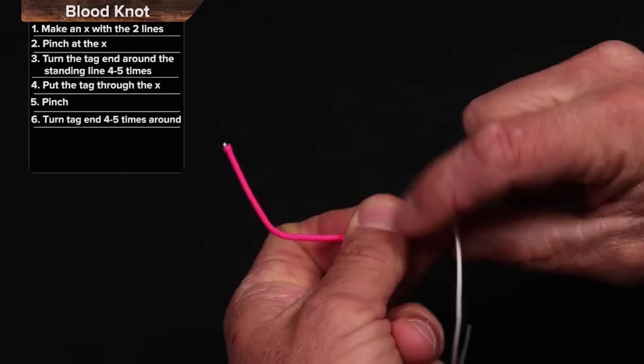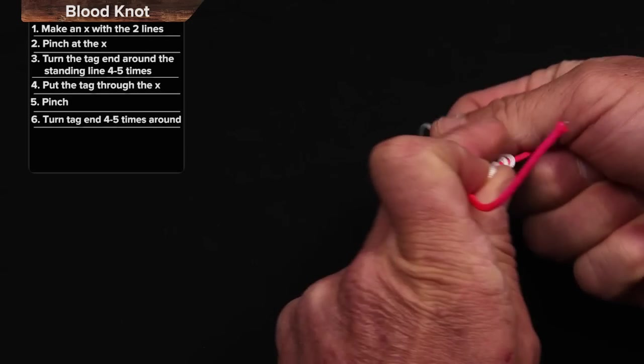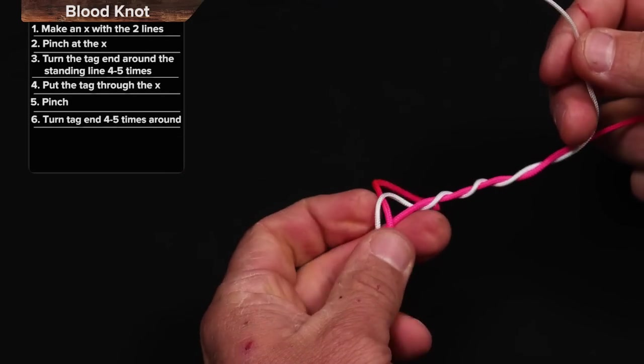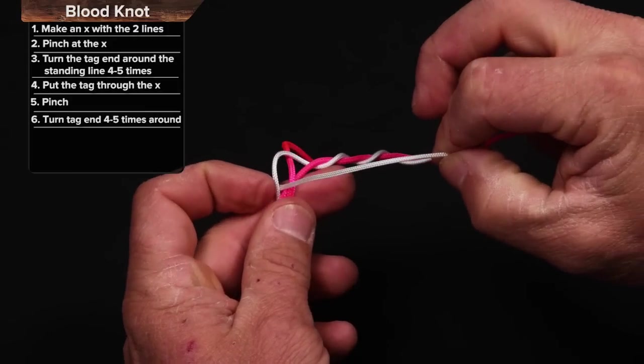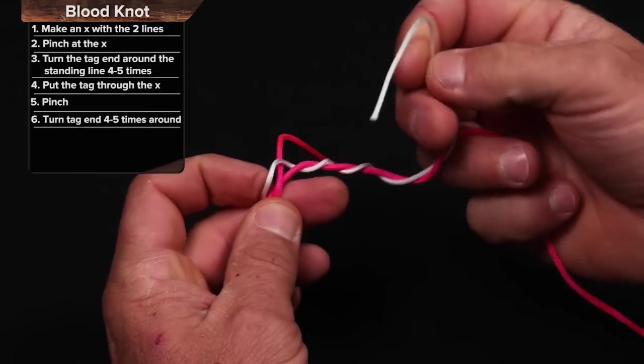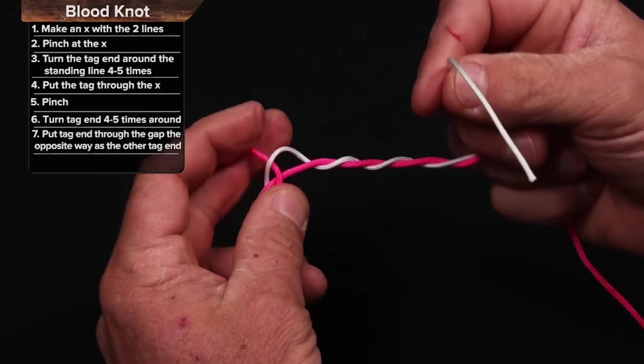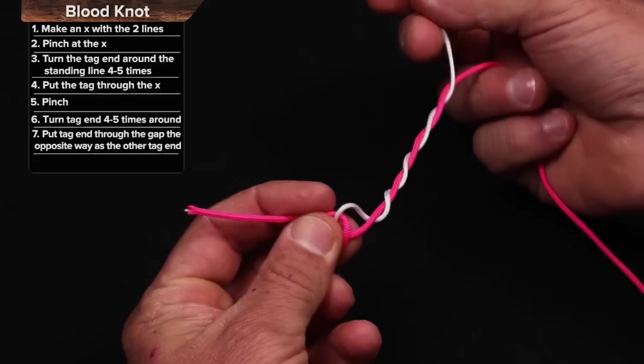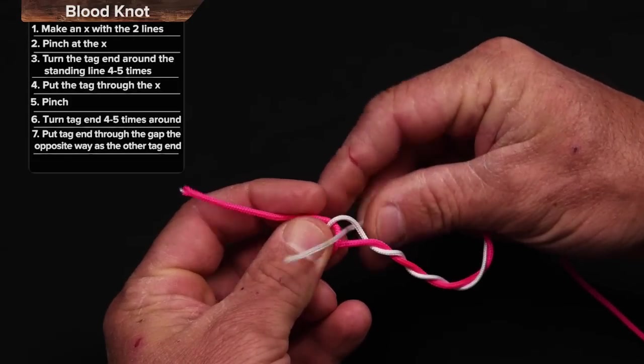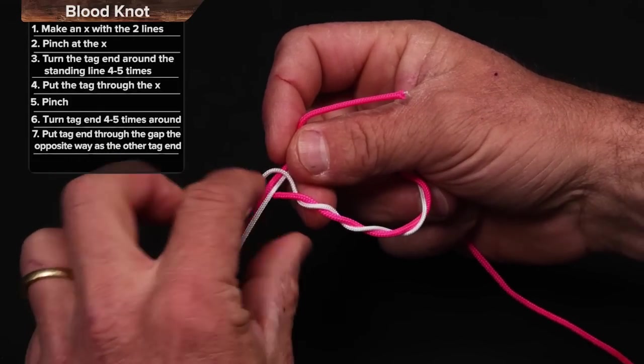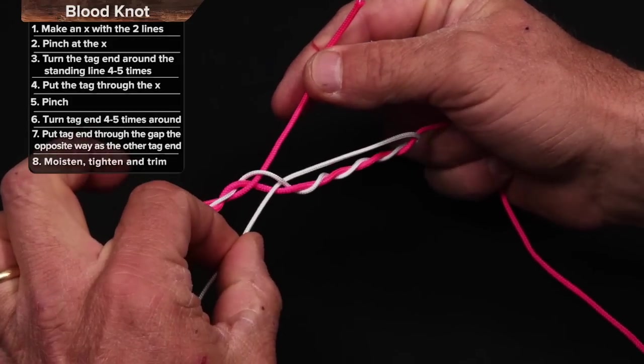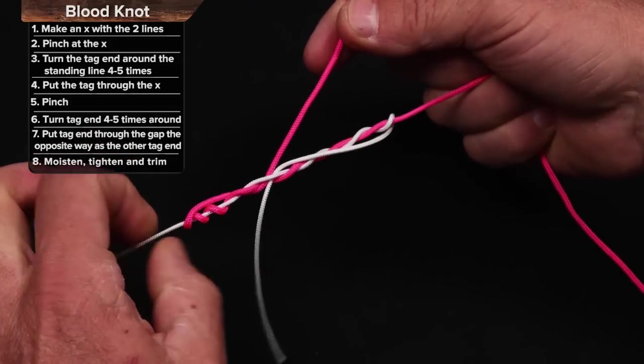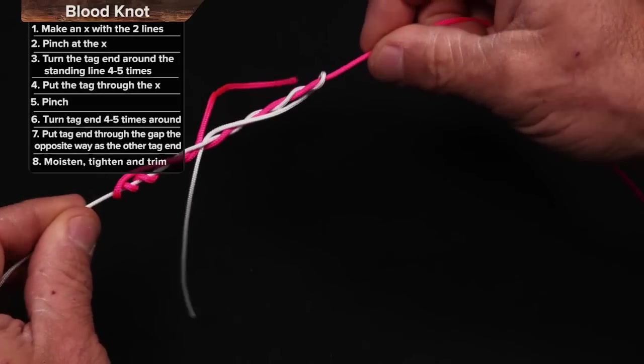One, two, three, four, and I'm going to come up here and I can either put this back through this way, which would be the wrong way. I want to put it back through the opposite way of this other tag that's coming out. So I want to go right in there like that. So when this is tied, these two tag ends are going to be standing out at a right angle opposite one another.